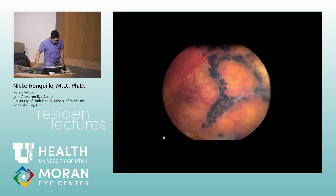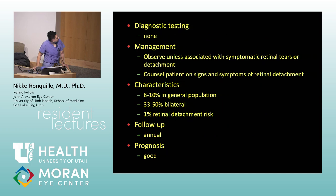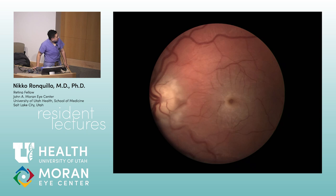Next — lattice degeneration. Clinically you see RPE hyperpigmentation and atrophic vessels — white lines crossing through it — characteristic of lattice. Lattice is a risk for retinal detachment, but the risk is low, which is why we don't prophylactically laser these lesions.